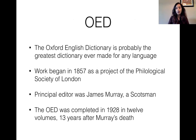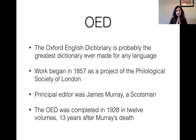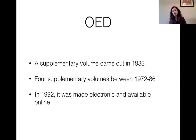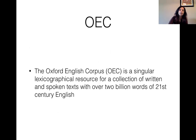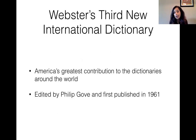This was also the era when many popular dictionaries were created. The Oxford English Dictionary began in 1857 and was completed in 1928 in 12 volumes — a project with a long duration. There were also many supplemental volumes, and in 1992 it was made electronic and available online. The Oxford English Corpus is another good resource, with over two billion words of 21st century English. Webster's Third New International Dictionary is one of America's greatest contributions to world dictionaries, first published in 1961.